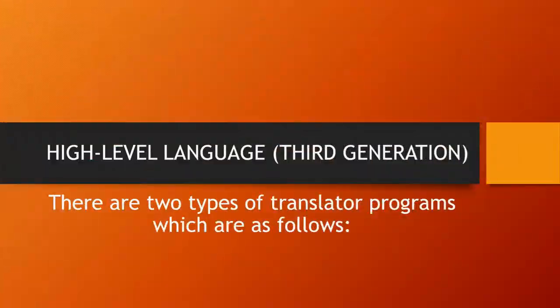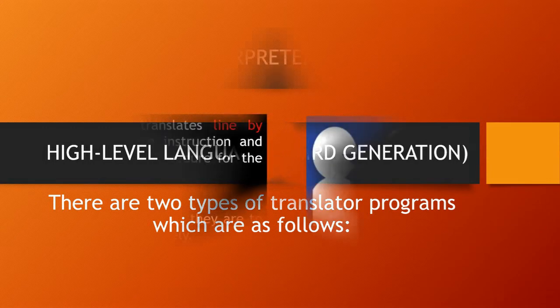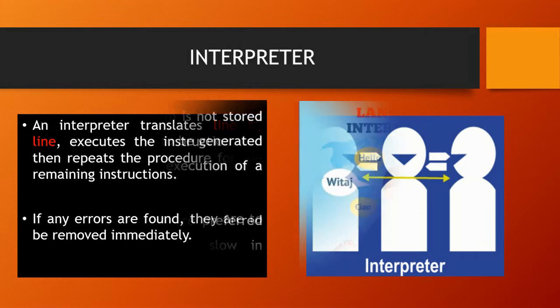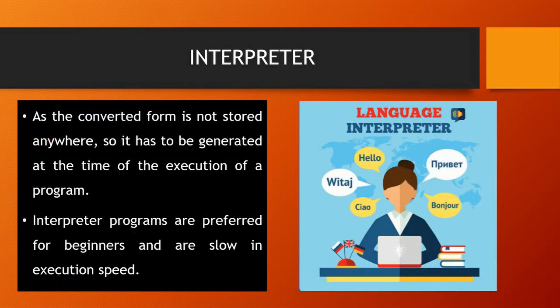There are two types of translator programs. First is the interpreter. It translates the program line by line, executes the instructions, and then repeats the procedure for remaining instructions. If any errors are found, they are removed immediately. As the converted form is not stored anywhere, it has to be generated at the time of execution of the program. Interpreter programs are preferred for beginners and are slow in execution speed.